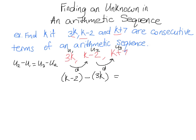is equal to k plus 7, which is our u3, minus u2, which is k minus 2. And notice that I put parentheses around all of my values because I didn't really want to think about changing anything, changing any signs in that first step.